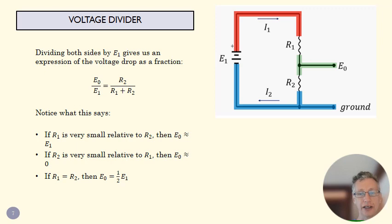And then finally, and this is the most useful one in practical terms, if R1 and R2 are equal, then I basically got 2R over 2R, and my divided voltage would be half of my input voltage.